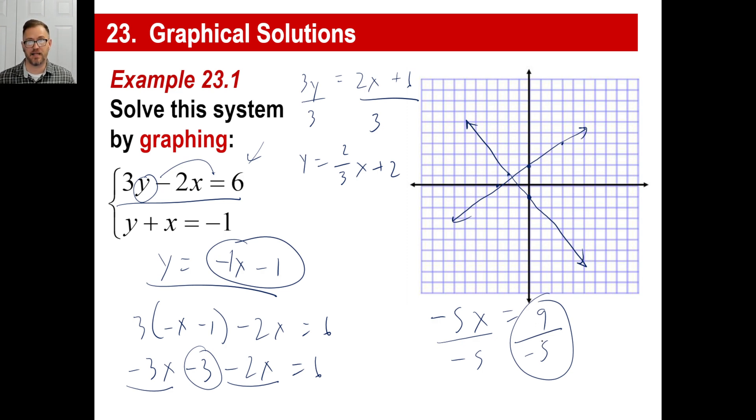Now, 9 divided by negative 5 is negative 1.8. That's the x. So if you look over here, if x is negative 1.8, well, if this is negative 2, be right there. But it looks like the place where these two lines cross, that's your answer, is right there. That's negative 1.8. Okay, now if you found the y after this, you could just go 9 over negative 5. I know this is going to be a mess on this screen here.